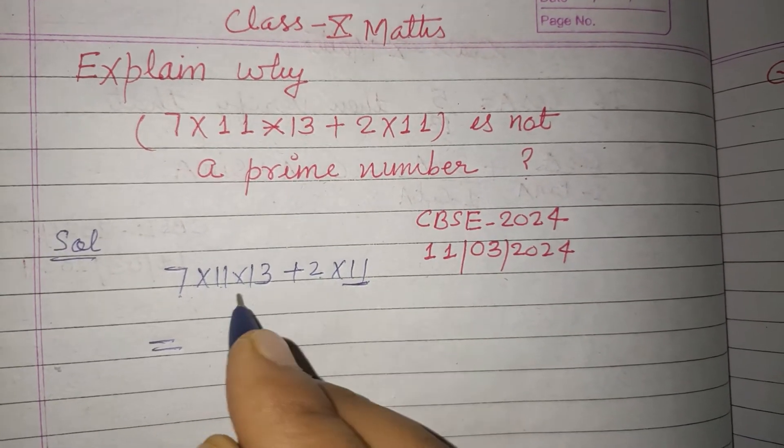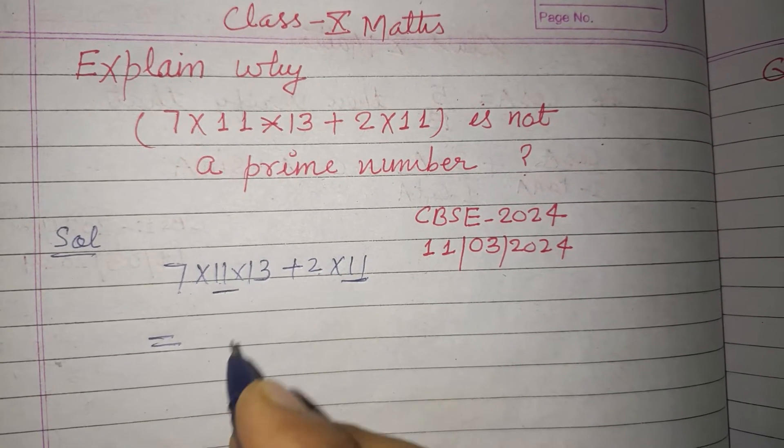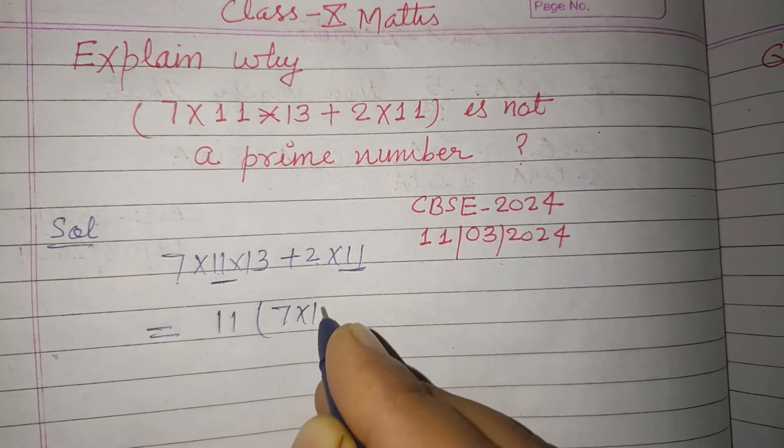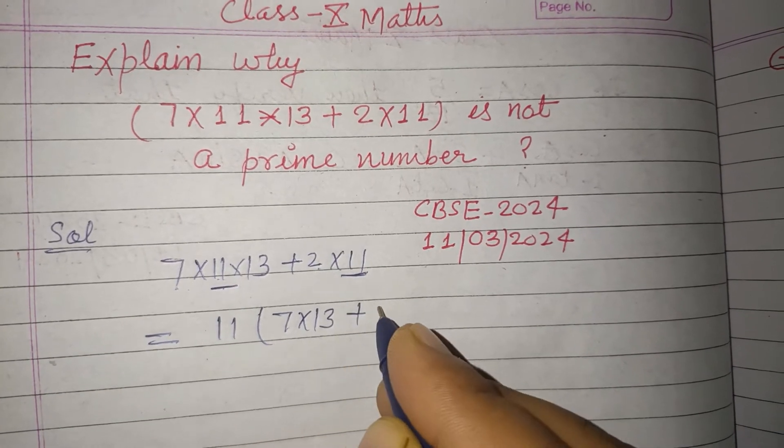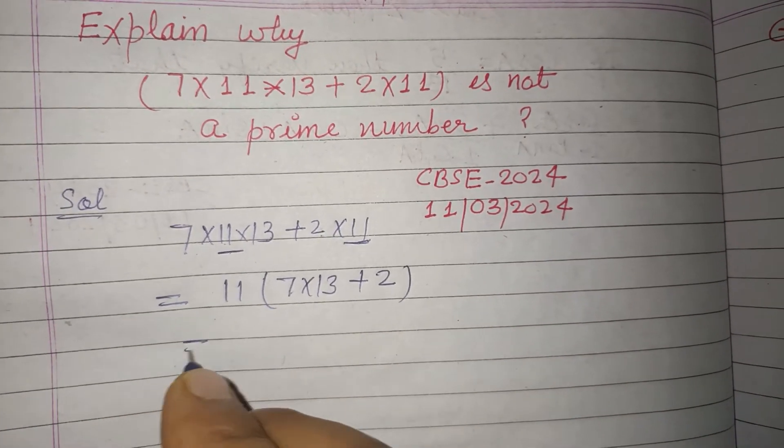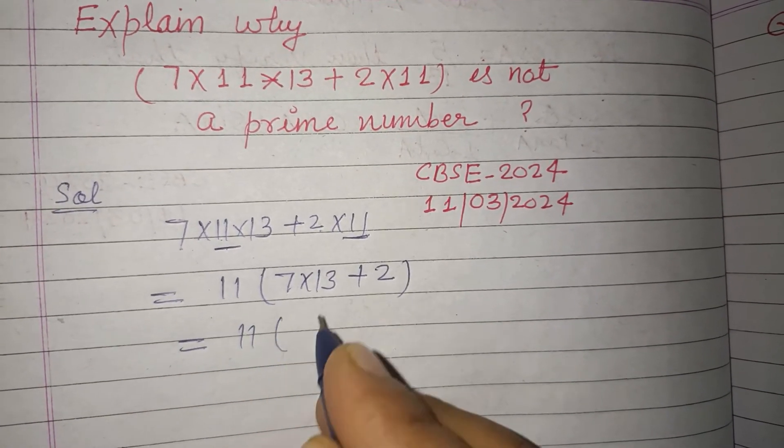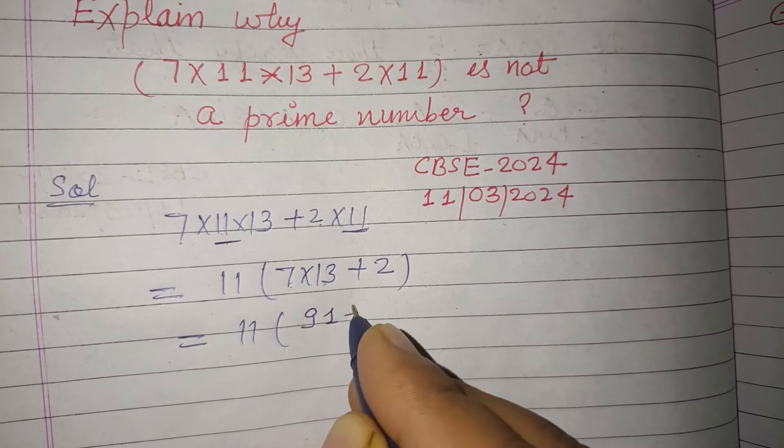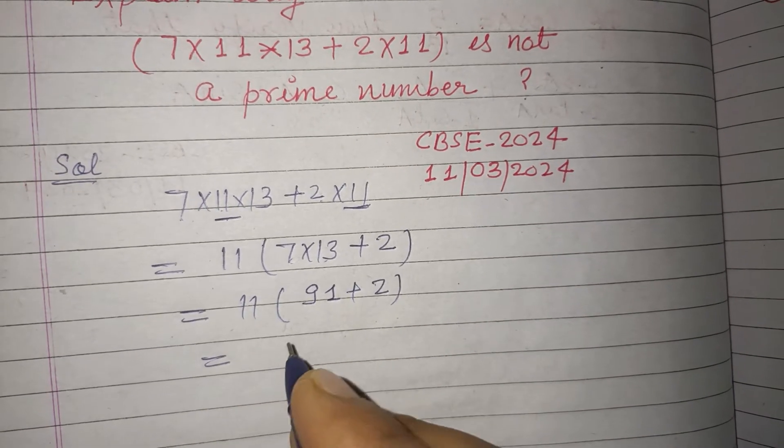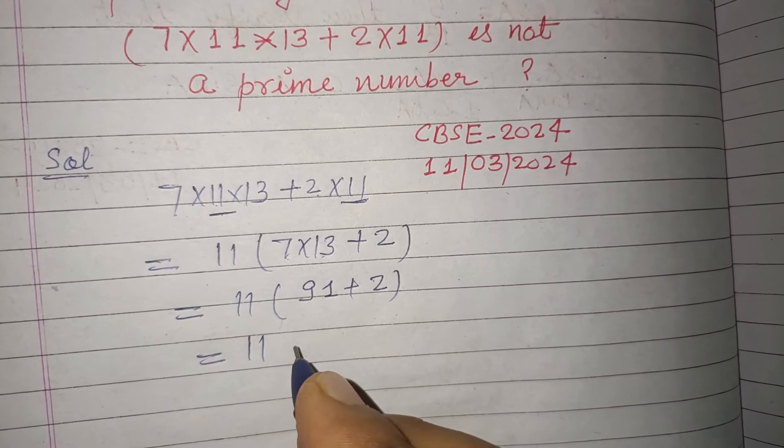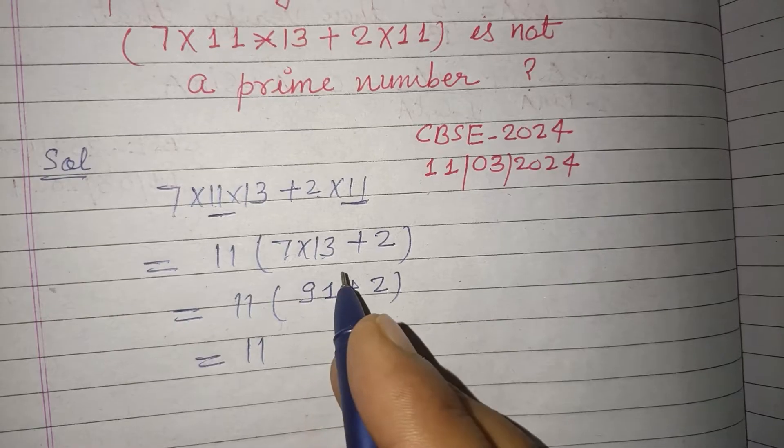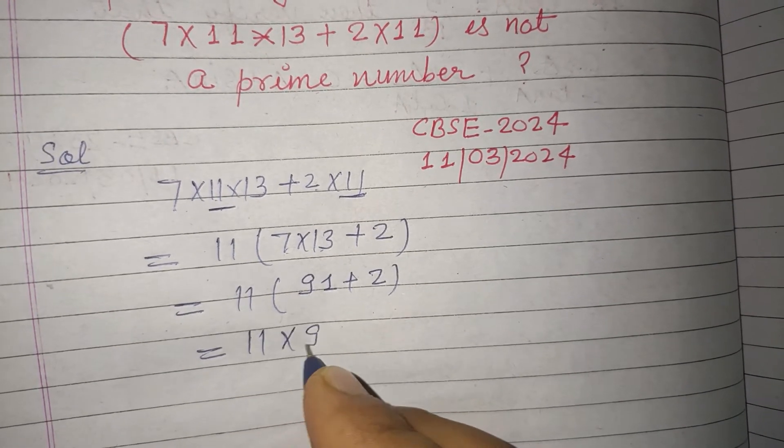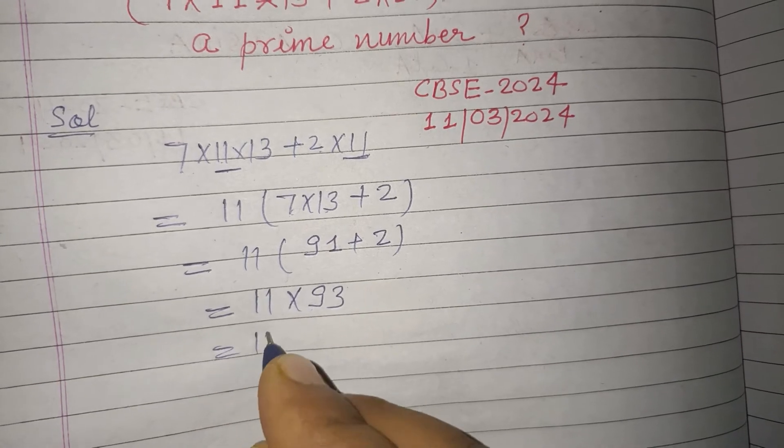So we take 11 common from these two terms. 11 is common, so 7×13 remains in the first term and 2 in the second. So 11 times, 7×13 is 91 plus 2, and this is 11×93.